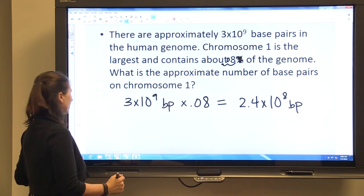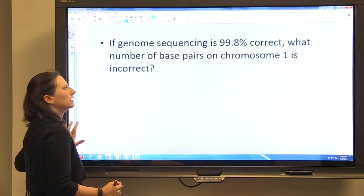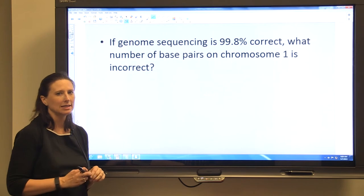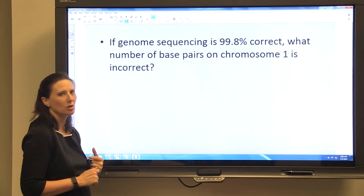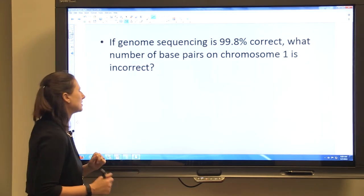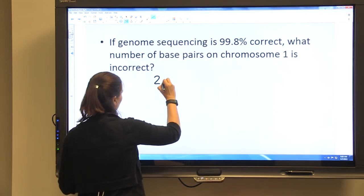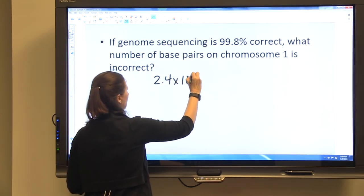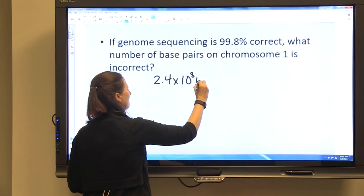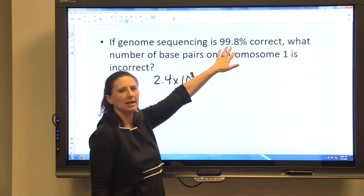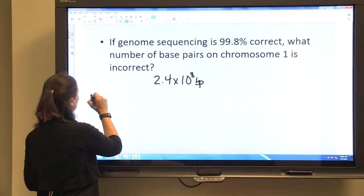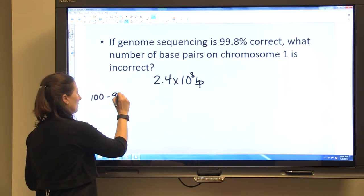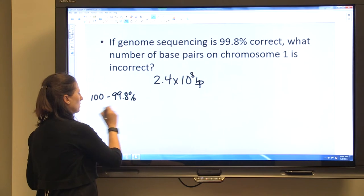But I'm going to take it a step further. And say that if genome sequencing is 99.8% correct, what is the number of base pairs on chromosome 1 that are incorrect? So we're going to have that 2.4 times 10 to the 8th base pairs. If we have 99.8% correct, we have 0.2% incorrect, right?